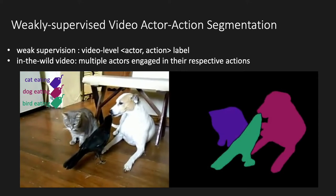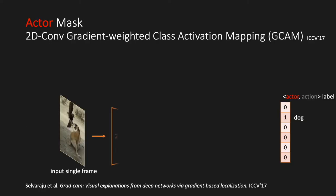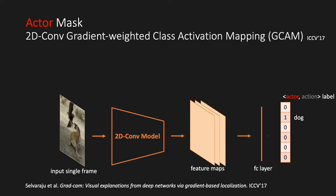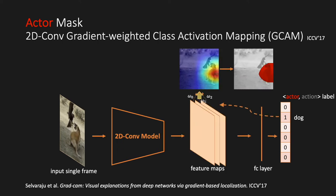So how can we do pixel-wise segmentation with video-level actor action labels? We need to synthesize a pool of pseudo-annotations to train our segmentation network. For the actor label, we utilize the existing 2D Comb GCN model to produce a mask that localizes the actors in each frame.